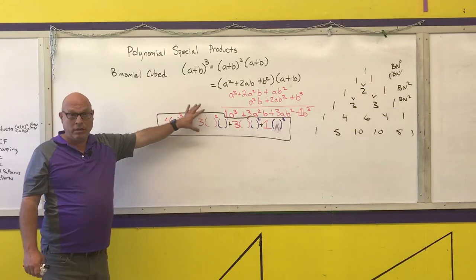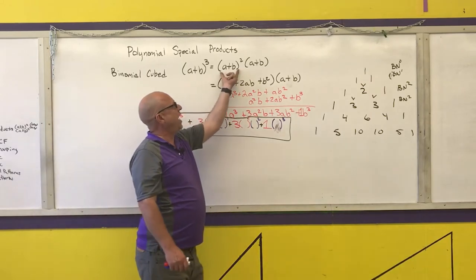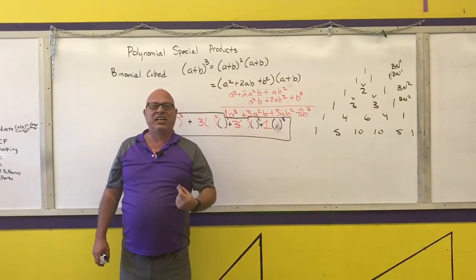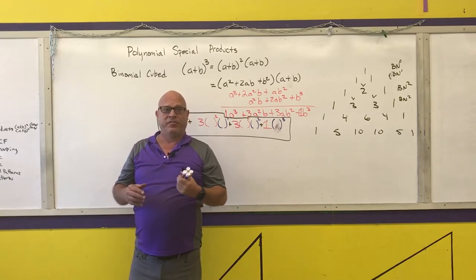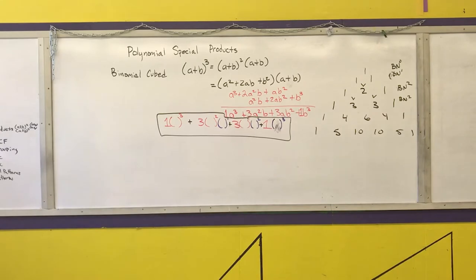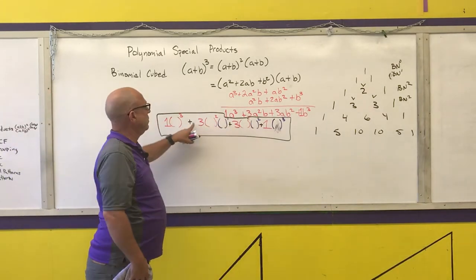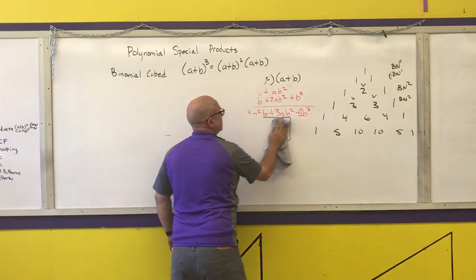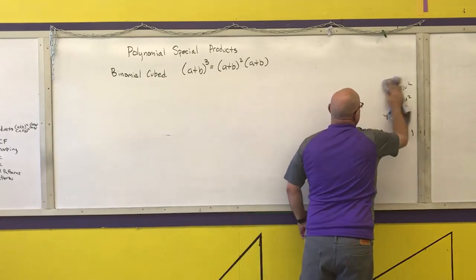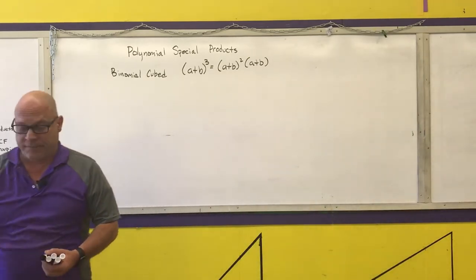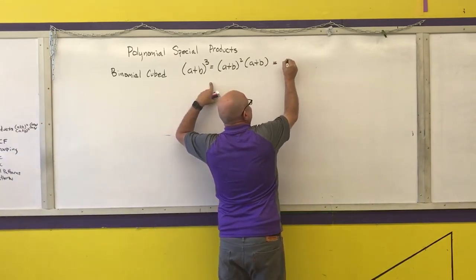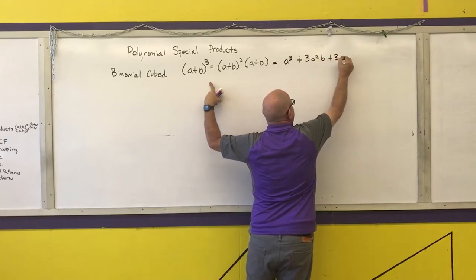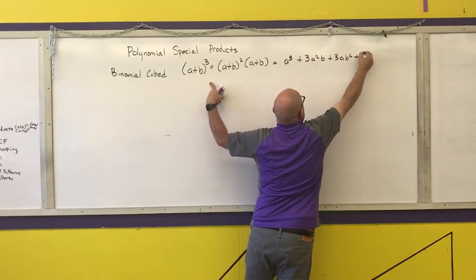If you cannot do this pattern, I have no problem with you rewriting it as something squared times that something and using the distributive property — however, it's going to take a lot of extra time. The general pattern is a plus b cubed equals a cubed plus 3a squared b plus 3ab squared plus b cubed.